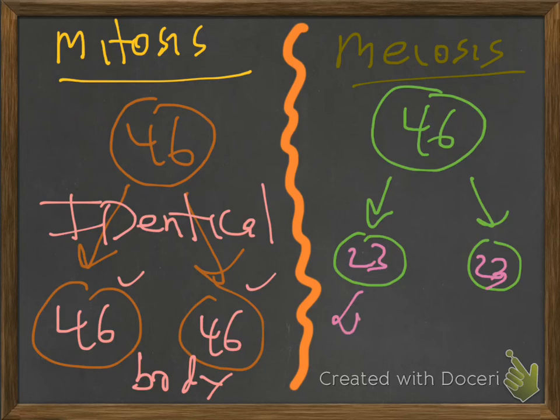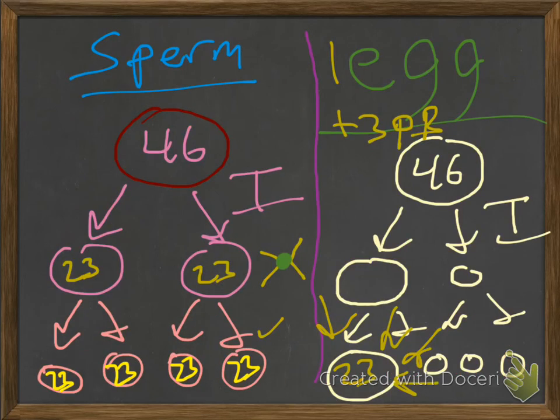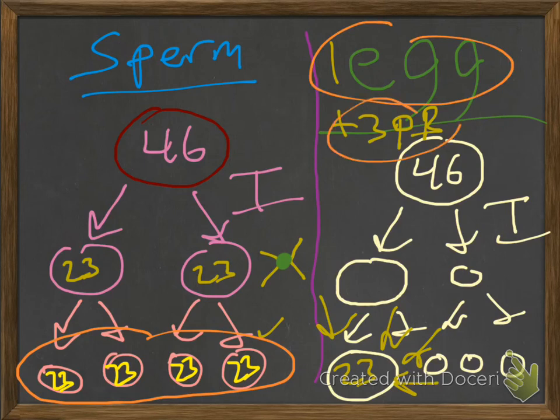And then they divide again. And then we end up with four cells, each with 23 chromosomes. I'll change the color here for you so it's easier to see. 23, 23, 23, 23. And remember with a male, if I just flip back to the last slide, we end up with four distinct sperm cells. Whereas with the female, we end up with one egg and then three polar bodies.